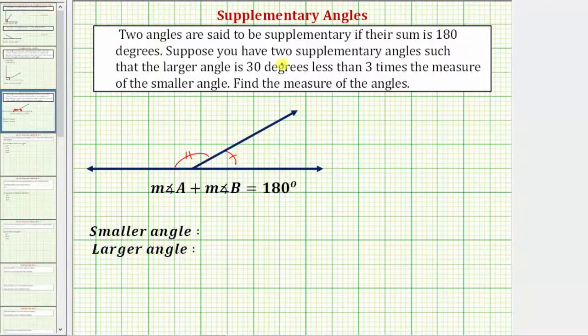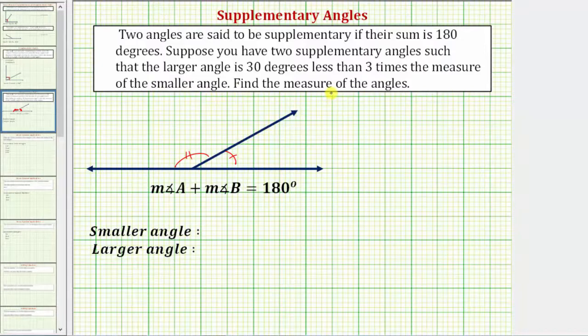Suppose you have two supplementary angles such that the larger angle is three degrees less than three times the measure of the smaller angle. We're asked to find the measure of the angles.